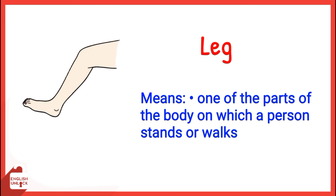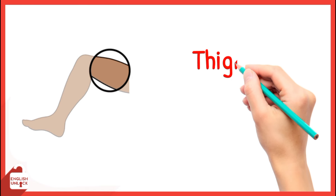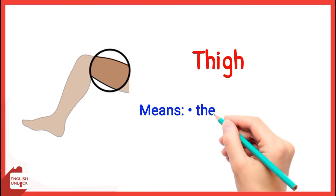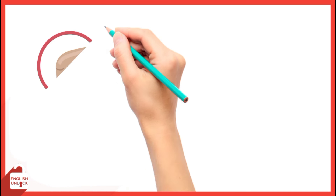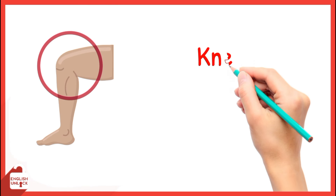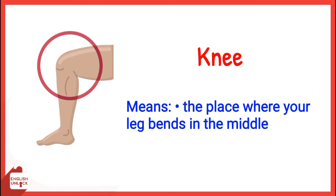Leg means one of the parts of the body on which a person stands or walks. Thigh means the part of a person's leg above the knee. Knee means the place where your leg bends in the middle.